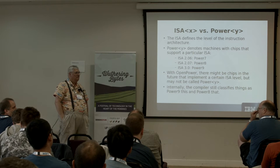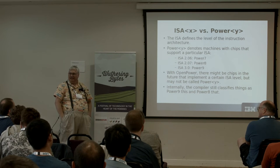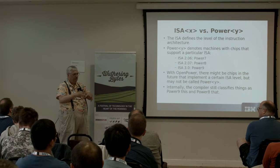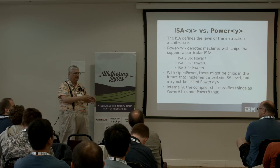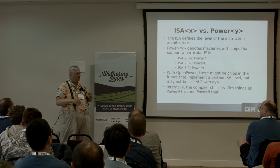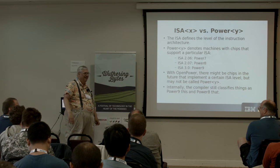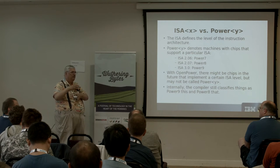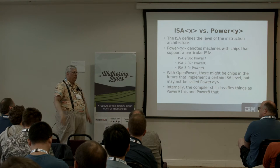We're trying to put our foot down and say you support the whole specification, and you can support additional things via additional -m options. We really don't want to get into the situation we had with earlier Freescale chips, where they didn't support the reciprocal approximation instructions even though ISA 2.04 said you must. We are trying to simplify the number of switches. If in the future there's a Chinese version of Power9 that doesn't have certain instructions, then we will document those switches.